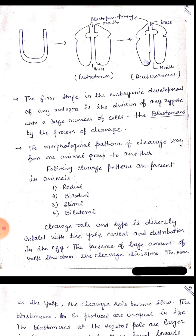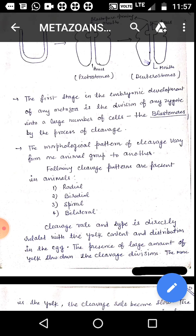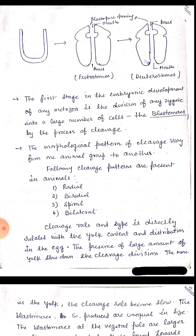What is the developmental pattern in metazoans? The first stage in the embryonic development of any metazoan is the division of a zygote into a large number of cells, the blastomeres, by the process of cleavage. The morphological patterns of cleavage vary from one animal group to another. Following cleavage patterns are present in animals: first is radial, second is biradial, third is spiral, and fourth is bilateral. This specific type of cleavage pattern provides specific shape and size to different animals.